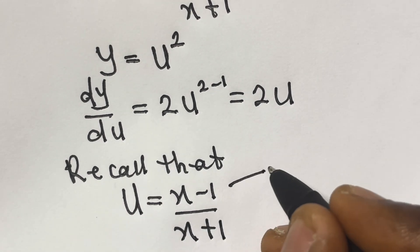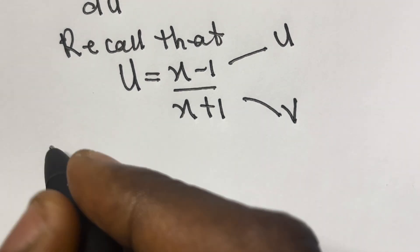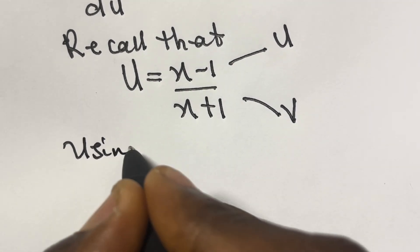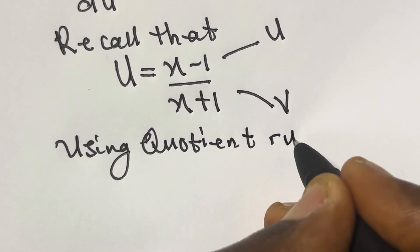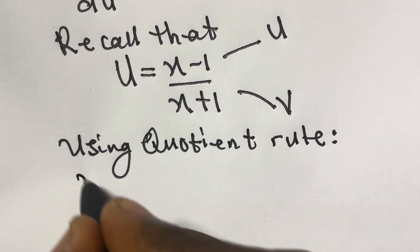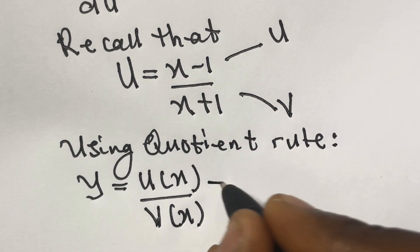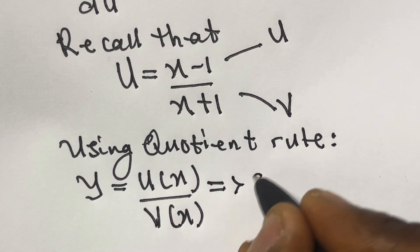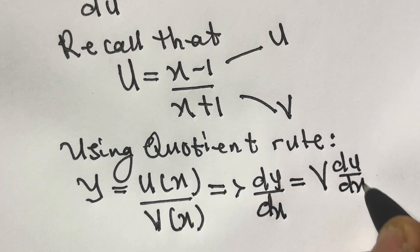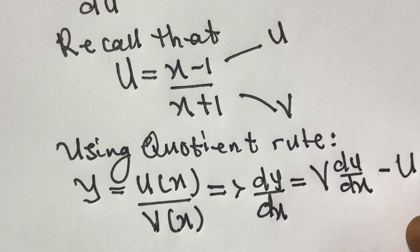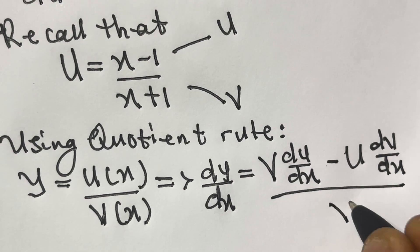We can let the numerator be u and the denominator be v. Using the quotient rule: if y equals u(x) divided by v(x), then dy/dx equals v times du/dx minus u times dv/dx, all divided by v squared.